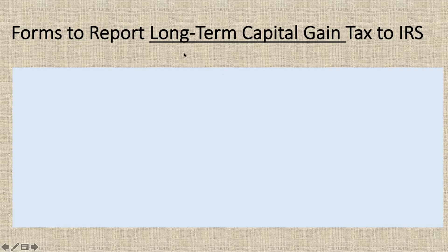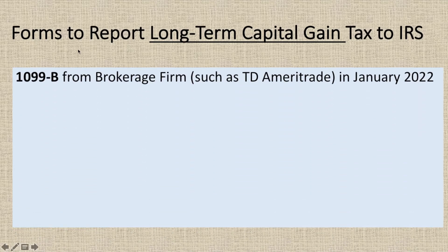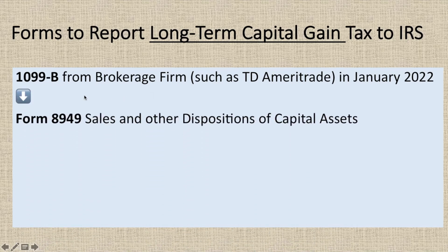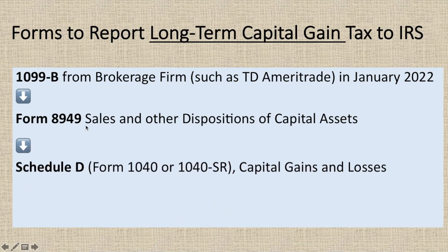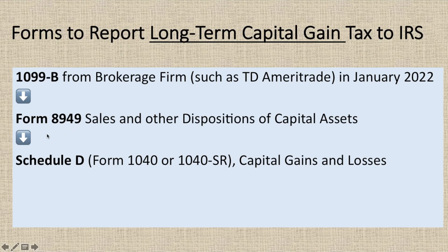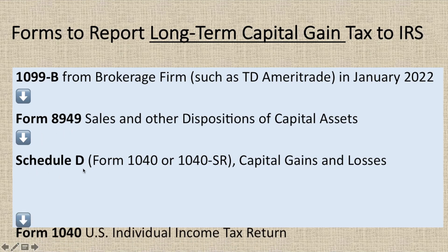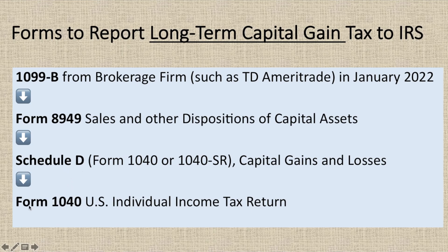What forms are used to report your long-term capital gain to the IRS? First, you'll receive Form 1099-B from your brokerage firm, such as TD Ameritrade. Then, using the 1099-B, you fill out Form 8949. After completing Form 8949, you fill out Schedule D, and then those figures go on your Form 1040.